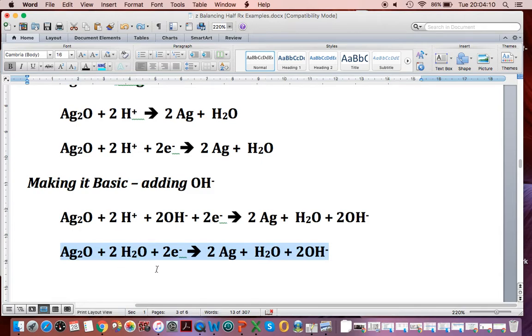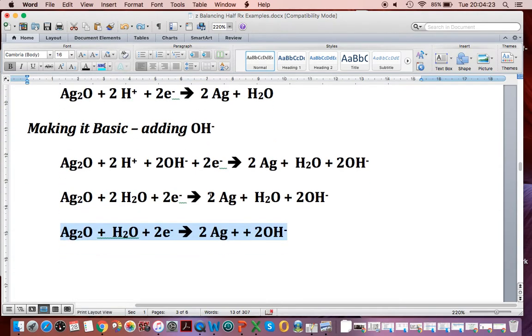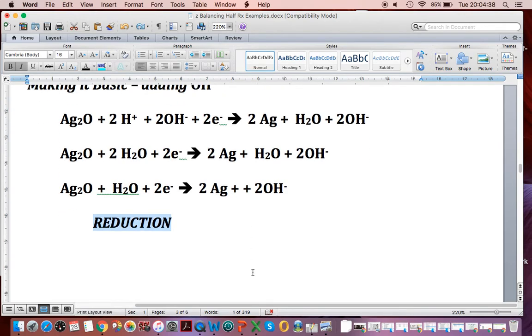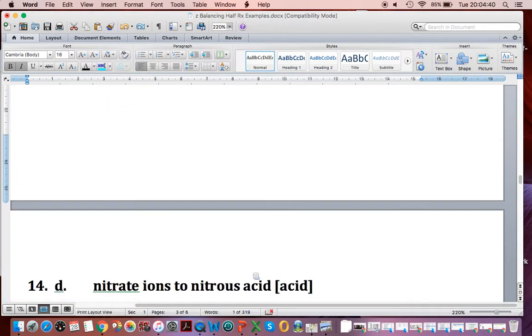But we have to simplify. This is not a correct answer yet, because we have 2 waters there, 1 water there. Typically if I had a chalkboard or whiteboard, I'd cross out the 2, leave behind 1 water there and I'd cross out the H2O there. And I would arrive at this reaction. Again, I should check that it's balanced. And I reminded you earlier, it's reduction, because electrons are left of the arrow. So it gets fairly complicated when you have to add OH minus, but if you take one step at a time, no problem.